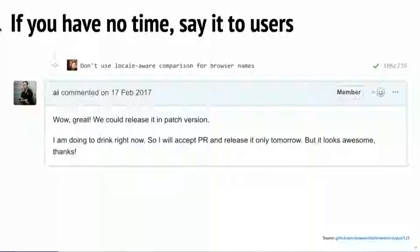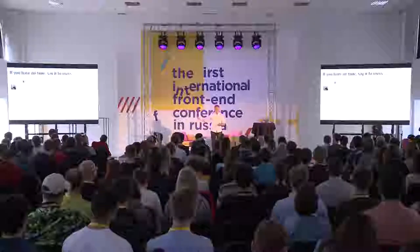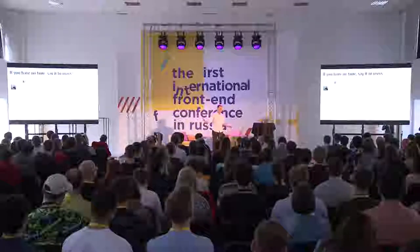Main rule: if you're a maintainer of open source and you don't have time today to answer a new issue, it's not a problem. Just say to your user, 'I can't answer today, I will answer when I'm able — tomorrow, a week later, or months later.' The main problem people have with issues is not that the pull request isn't accepted. The main problem is ignorance, because the human-to-human relationship is more important than code.